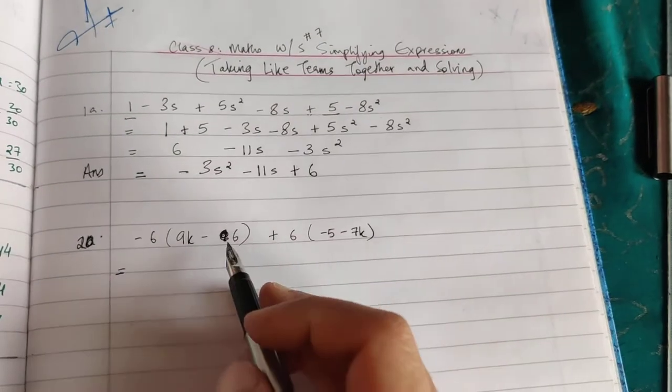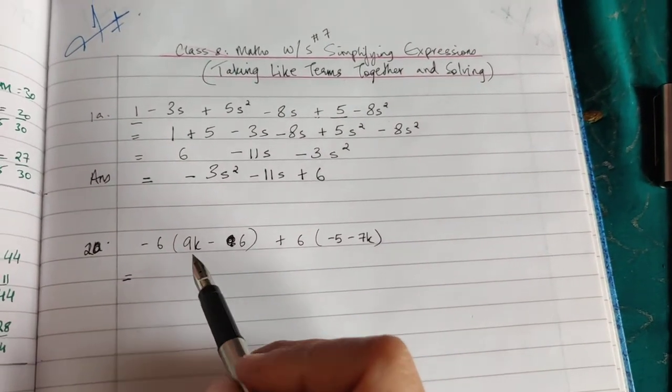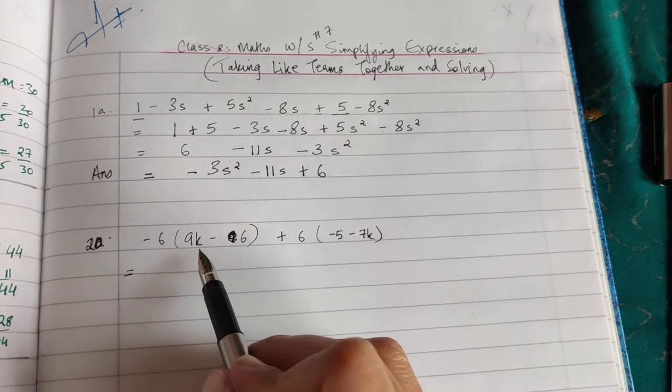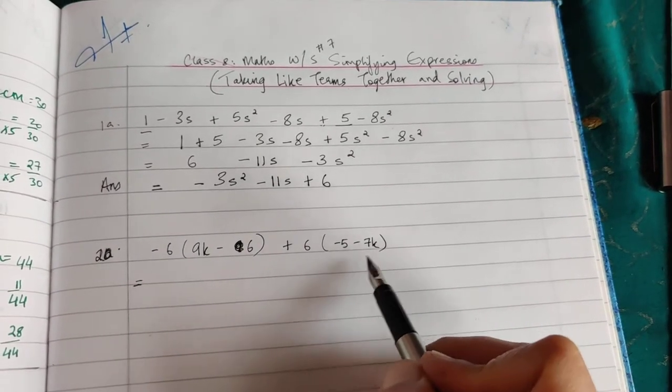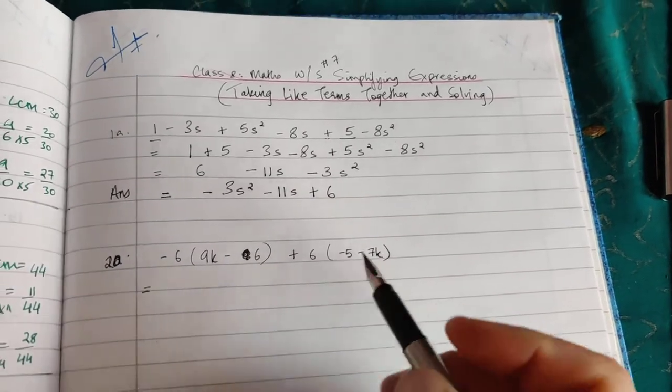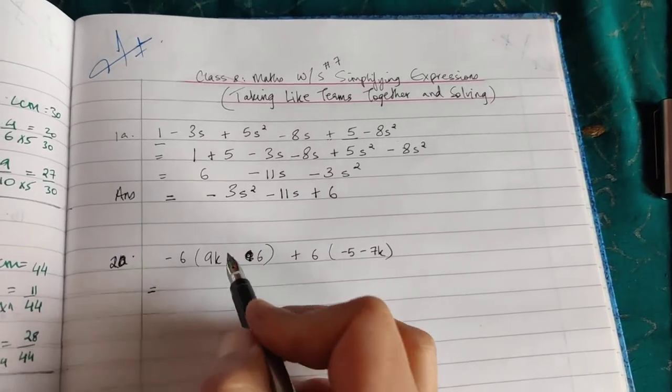Okay, here's an example of a problem with brackets. First, writing the question: -6(9k - 6) + 6(-5 - 7k). Double check the question, it's okay. First step: open brackets now.